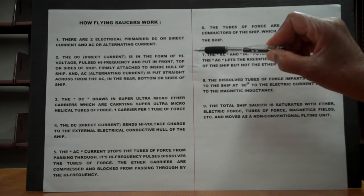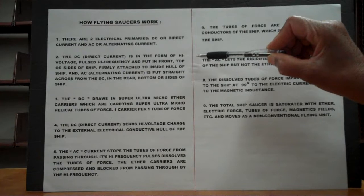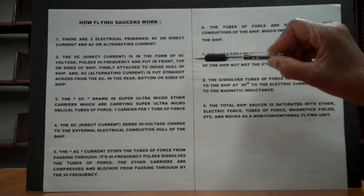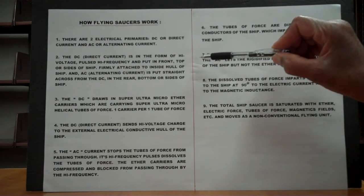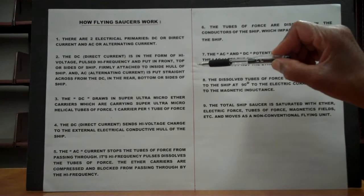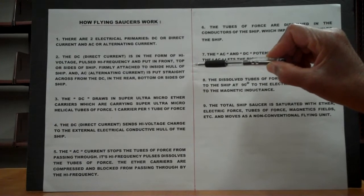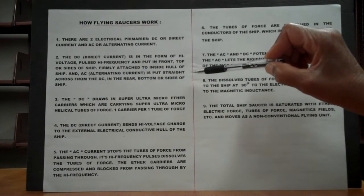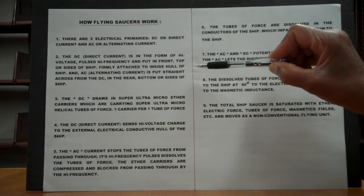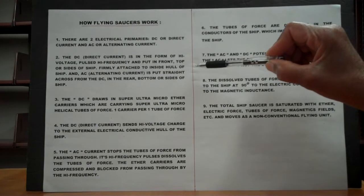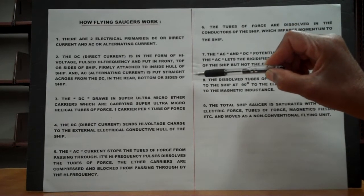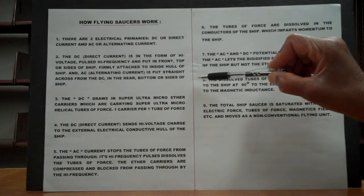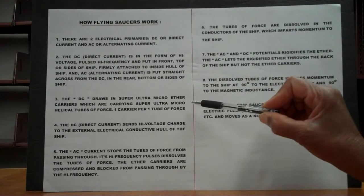Number two: the DC direct current is in the form of high voltage, pulsed, high frequency, and put in front, top, or sides of the ship, firmly attached to the inside hull of the ship. And AC, alternating current, is put straight across from the DC in the rear, bottom, or sides of the ship.